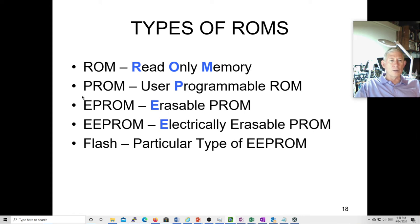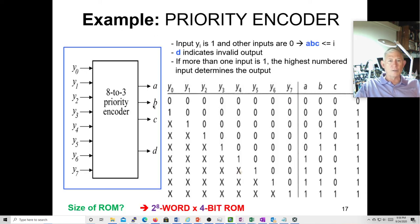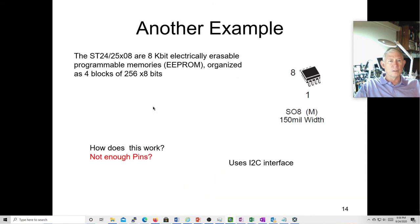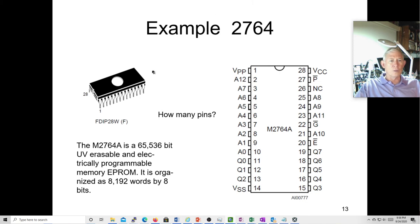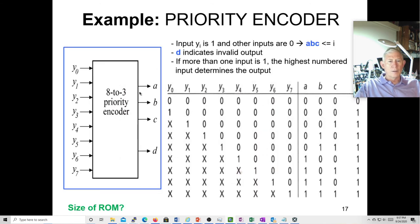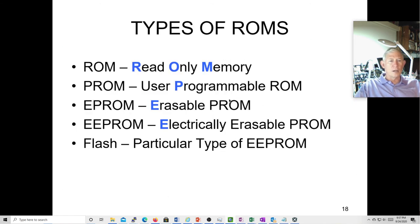The erasable programmable read-only memory — like the 2764 we just looked at — had a little window where you could erase it with UV light, put it in a programmer, program it, then cover up the window so it doesn't get erased accidentally and plug it into whatever board it's going in. You usually had to program it out of circuit. Then there's the electrically erasable programmable read-only memory — the EEPROM — which can be programmed and reprogrammed in circuit.